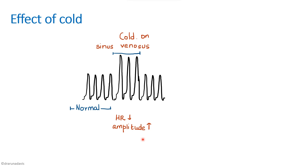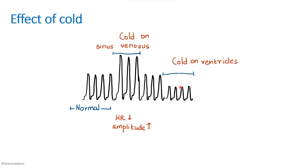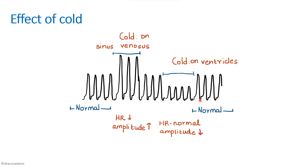We then draw the normal cardiogram again and see the effect of cold on the ventricles. The heart rate is normal but the amplitude has decreased. When there is cold on the ventricles the metabolic rate decreases and the force of contraction decreases, giving a decreased amplitude. From this graph we can see that heart rate is determined by the sinus venosis and force of contraction is determined by the ventricles.